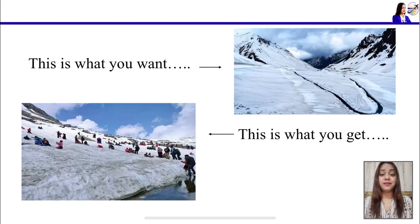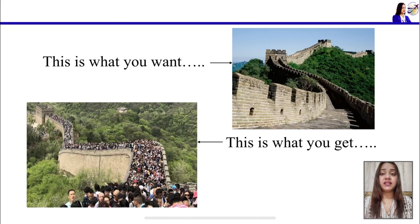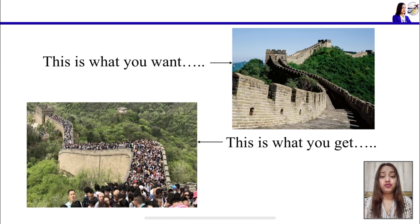As you can see, a huge number of tourists are traveling the world. These images illustrate the consequences of exceeding tourism carrying capacity. In the first image, you see what you want to experience at a destination, and in the second, this is what you actually get due to tourist influx and overcrowding — damaging not only the tourist's experience but also destroying the destination's beauty. The same is shown with the Great Wall of China example.